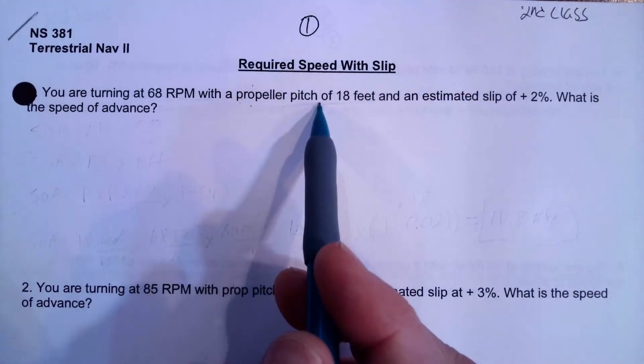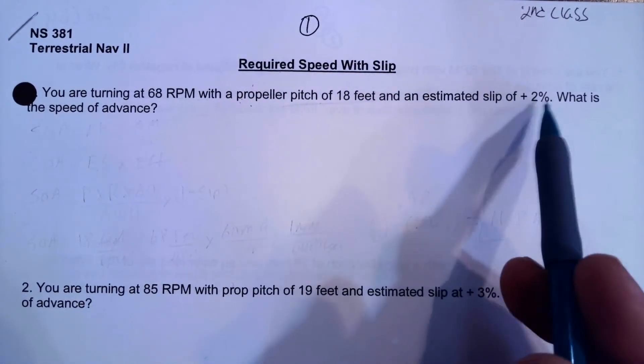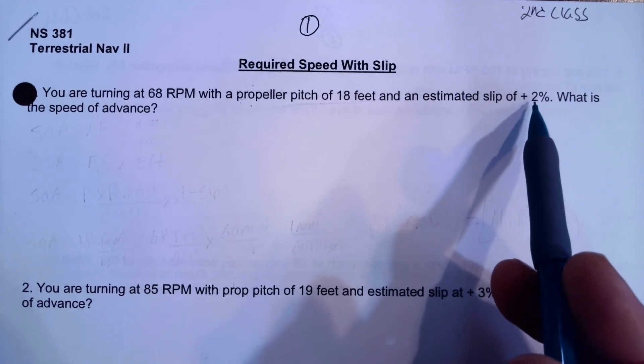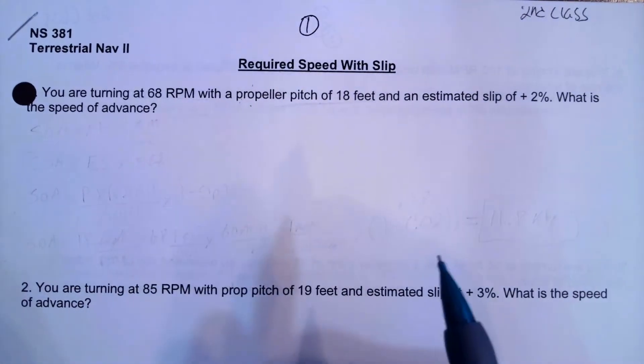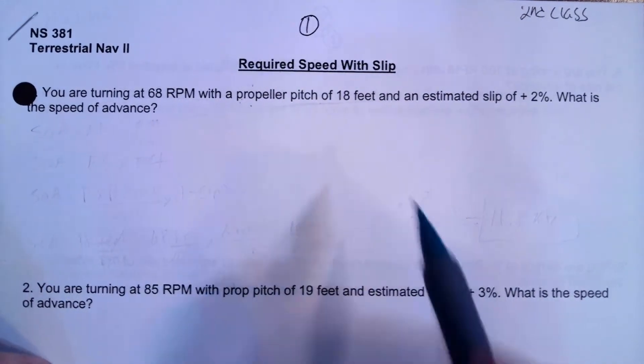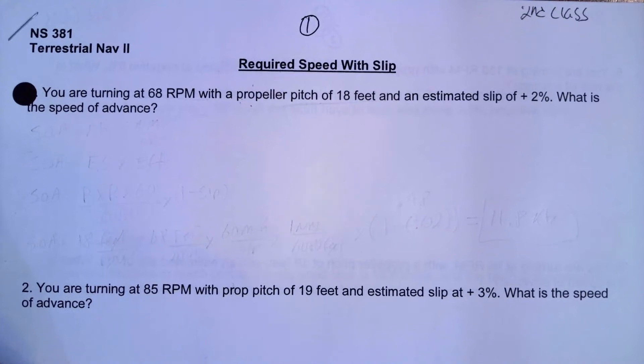If we know our pitch and our RPM, and we know what our performance is, we're going to be performing about 2% less than our pitch times our RPM, we should be able to calculate what our actual speed is. So what are we going to do? We're going to use the formula for speed of advance for this.